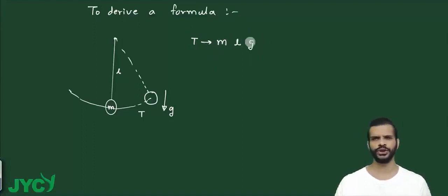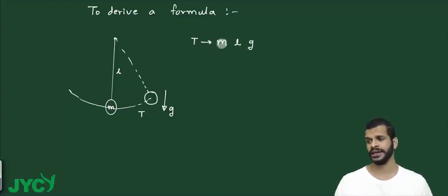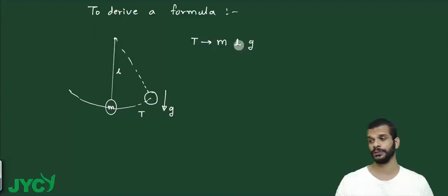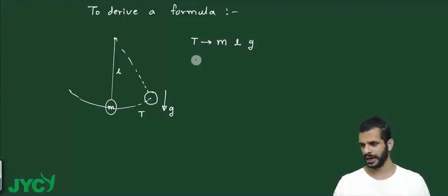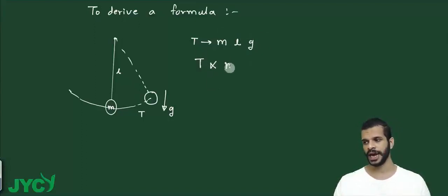I know my time period is proportional to m to the power a, l to the power b, g to the power c. So I will write: time period T is equal to some constant k multiplied by m to the power a, l to the power b, g to the power c.